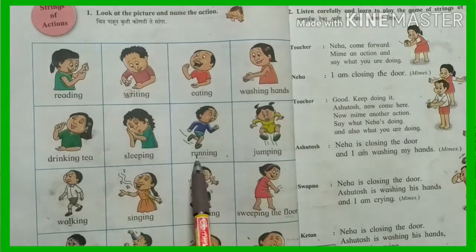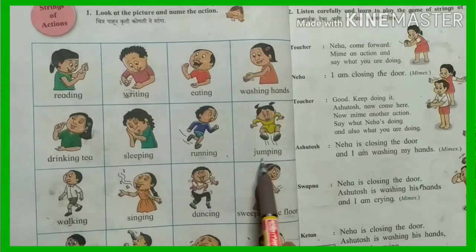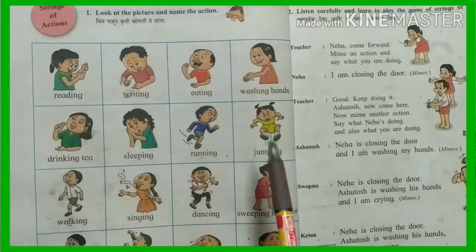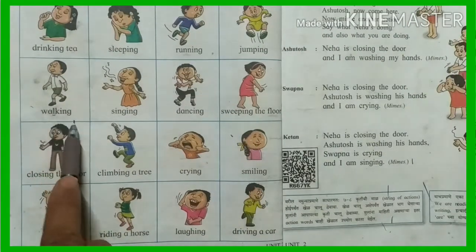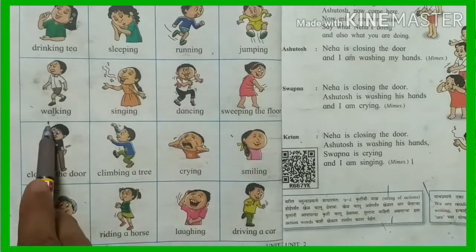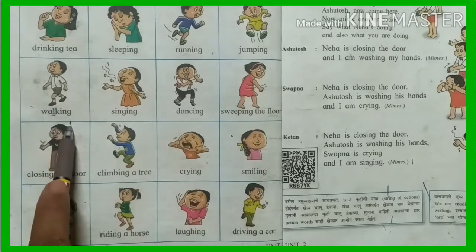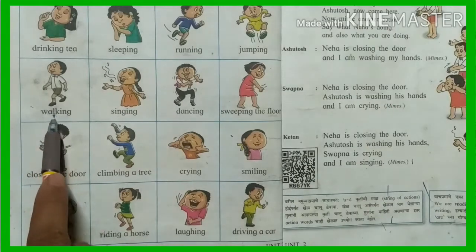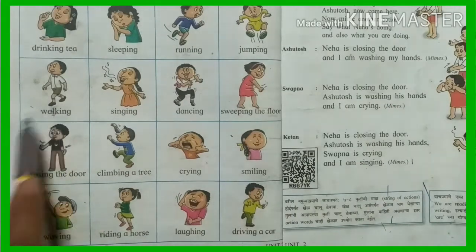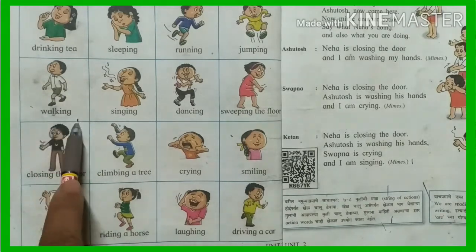Then next: Running. R-U-N-N-I-N-G. Running. Jumping. J-U-M-P-I-N-G. Jumping means Udimarnay. Next picture: Walking. W-A-L-K-I-N-G. Note that L is a silent letter, so it is Walking, not Walk-ing. Walking means Chalne.